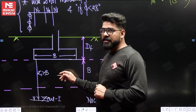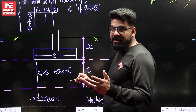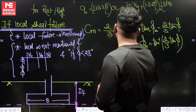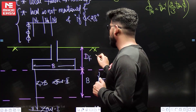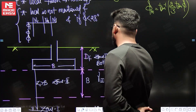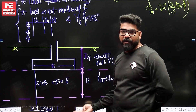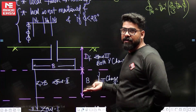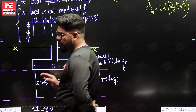If the water table is in Zone 2 (between the base and depth B below the base), then the third gamma will change. If the water table is in Zone 3 (above the base, within Df), then both gammas will change. If water table is at or above ground level, both gammas change. If it is below Zone 1, there is no change.